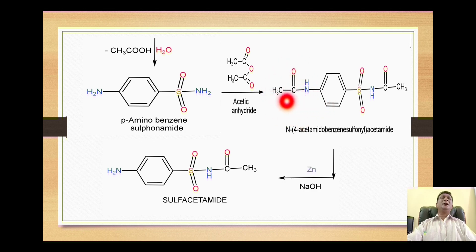That means this amide portion, R-C=O-NH, is clearly obtained from the acid. So zinc and NaOH when reacted with this diacetyl derivative brings deacetylation on this amino group.